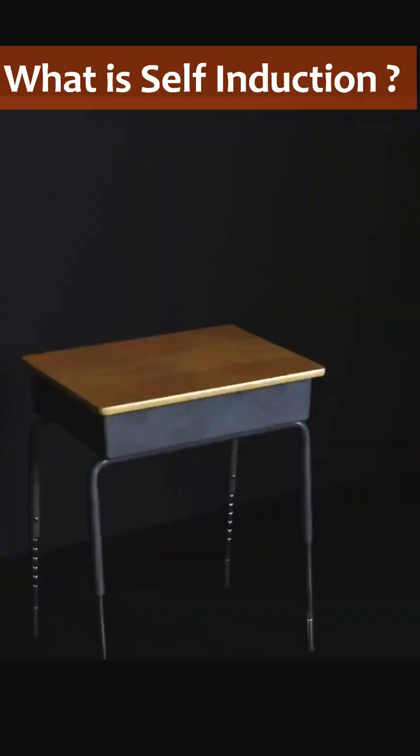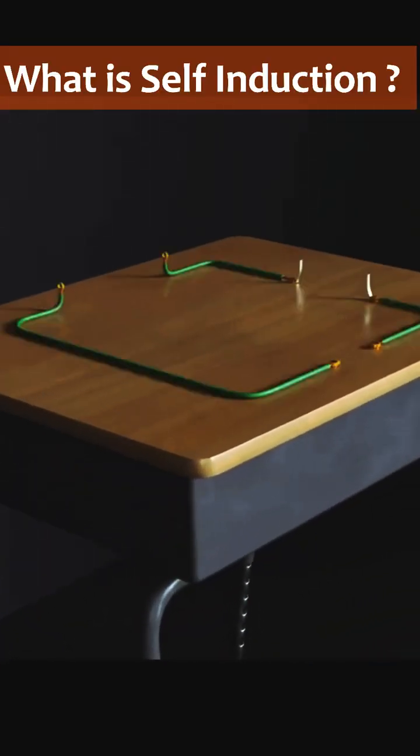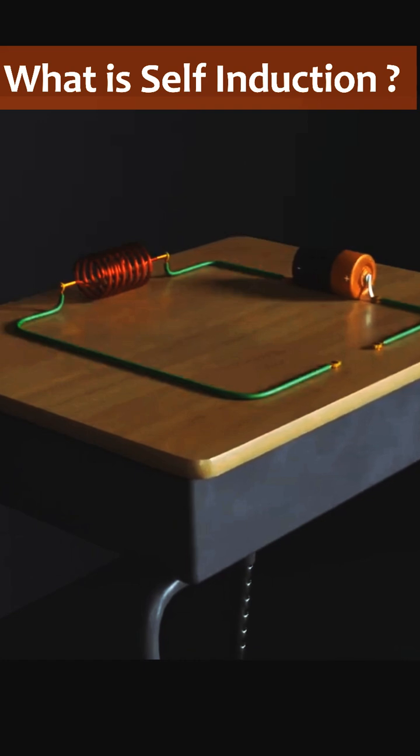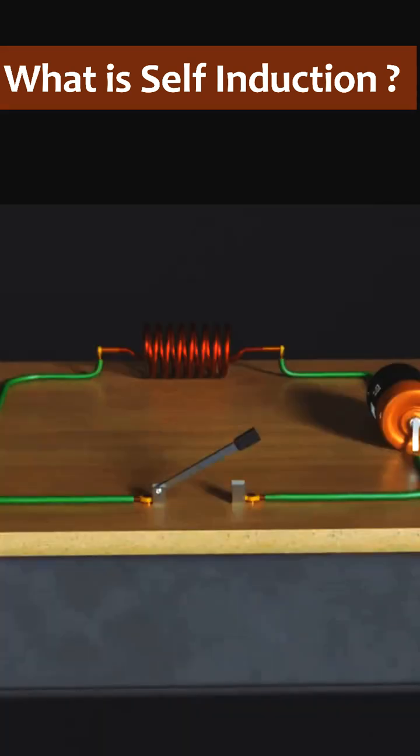Let's start with the question, what is self-induction? To understand it, let's take an electric circuit consisting of a coil, a battery having an EMF of 5V, and a switch to start and stop the current flow in the circuit.